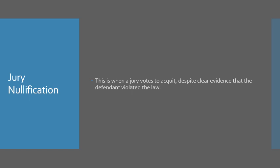Jury nullification is a phenomenon in which a jury votes to acquit in spite of clear evidence that the defendant violated the law. There could also be something like this in civil cases where the jury defies the law or the judge's instructions because they don't agree with it, or they think the interests of justice lie elsewhere.